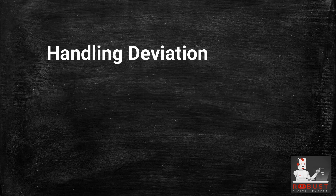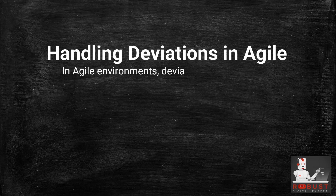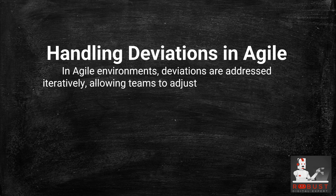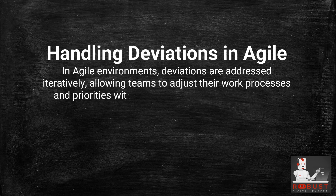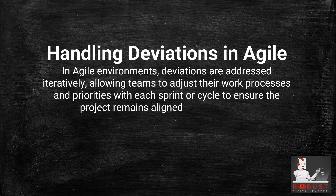Handling Deviations in Agile: In agile environments, deviations are addressed iteratively, allowing teams to adjust their work processes and priorities with each sprint or cycle to ensure the project remains aligned with objectives.